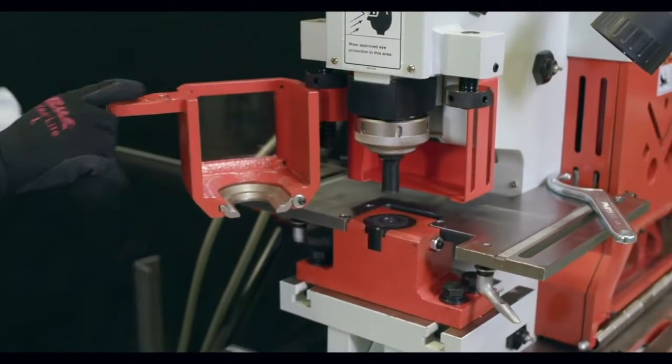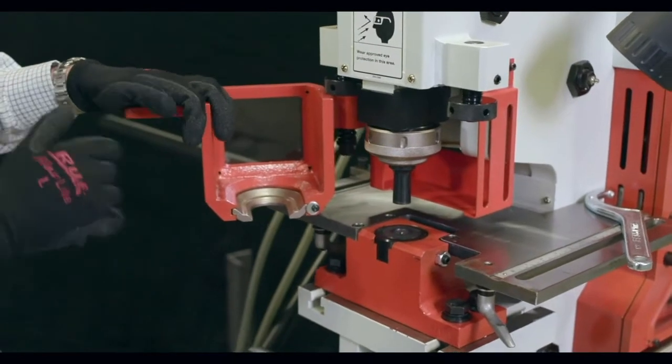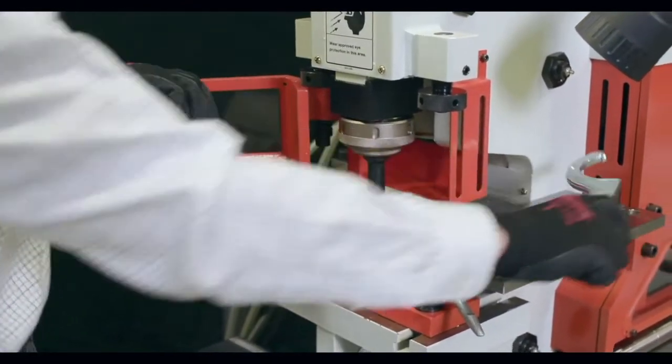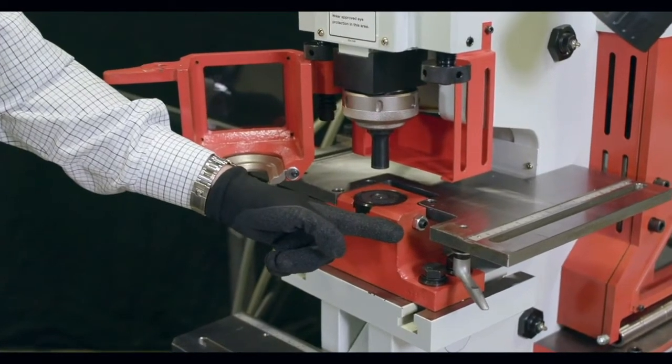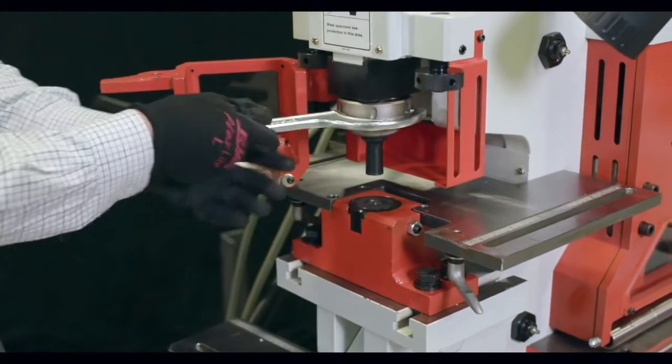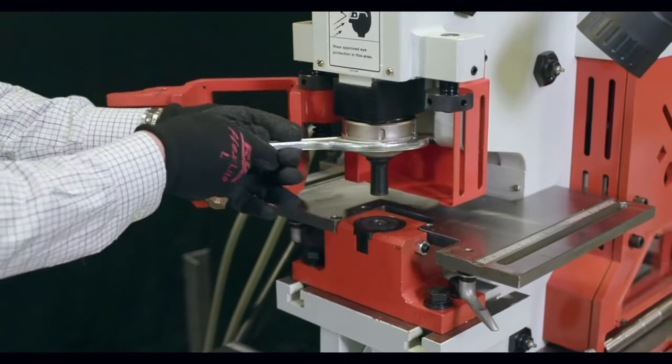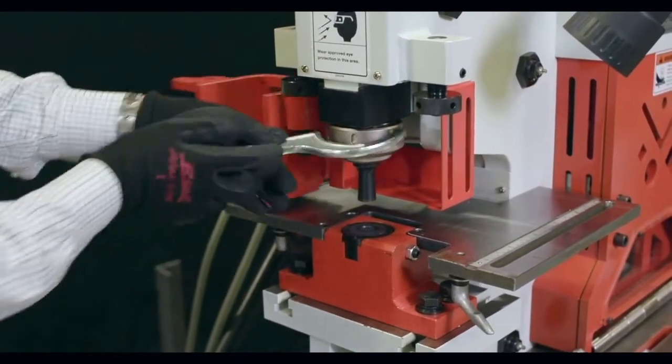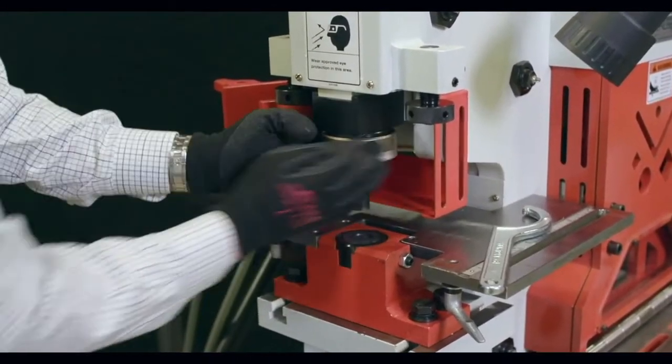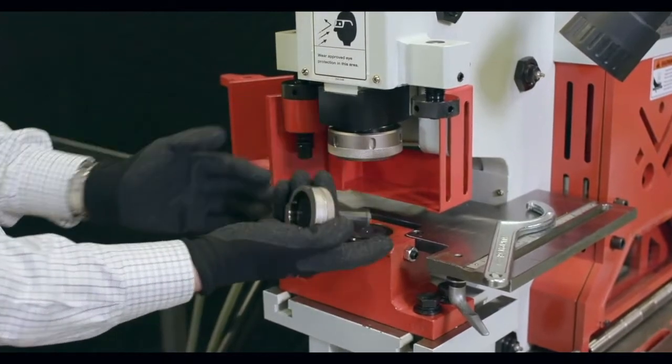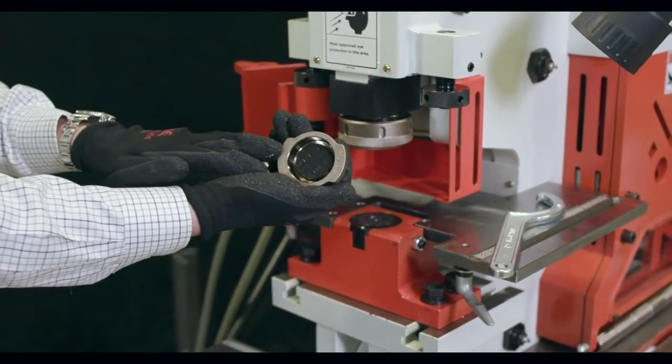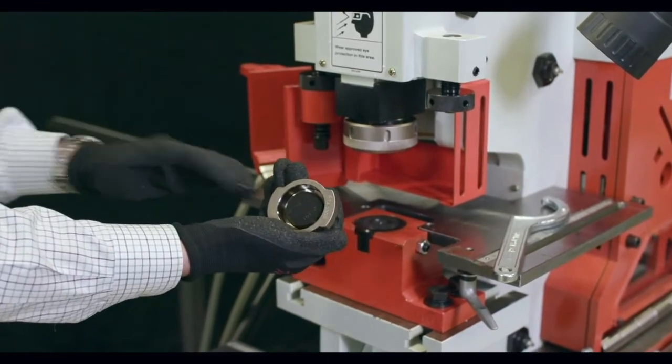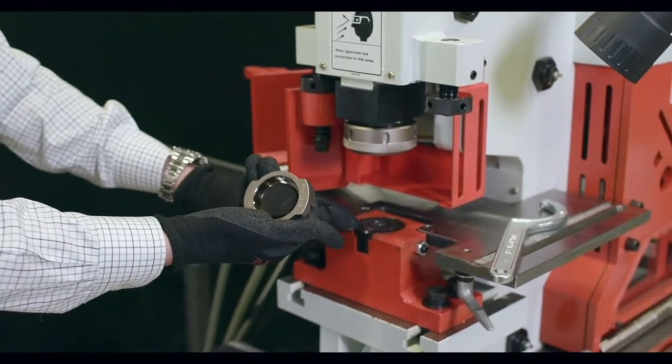All of the tooling on the punch station of all the Sunrise Ironworkers and most importantly, this one is quick change. The die itself removes with a small pin. And the punch, we just use a spanner wrench and can twist that sleeve and the punch falls right out. We do give you interchangeable sleeves. And you get up to that inch and a half round capacity as standard.